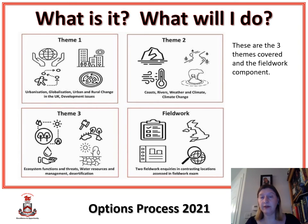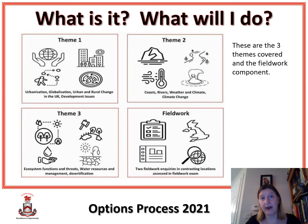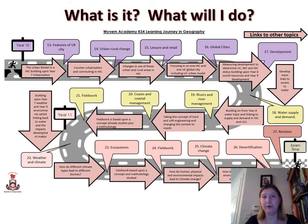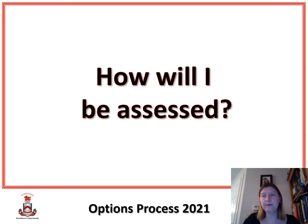We also do a fieldwork component. In normal circumstances we would go out on two trips — a human landscape and a physical landscape. However, due to current restrictions we're not allowed to do those at the moment, but I'm hopeful that by the time you get into Year 10 and 11 those will go ahead again. This is our course journey — the purple ones are human geography, yellow is physical geography, and pink is environmental geography. There are links between all three that we can't ignore, and it follows a nice flow continuing on from Key Stage 3.